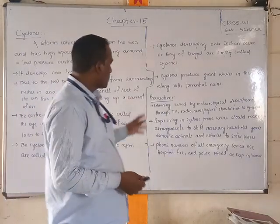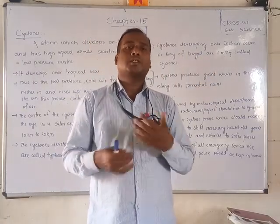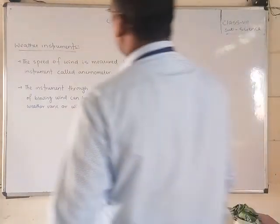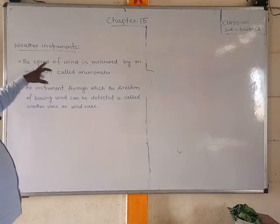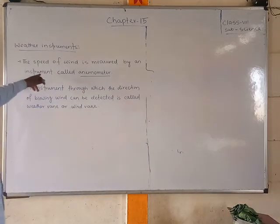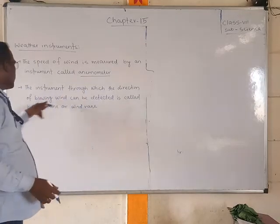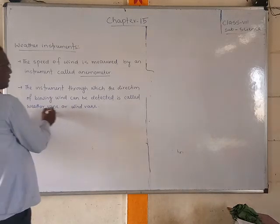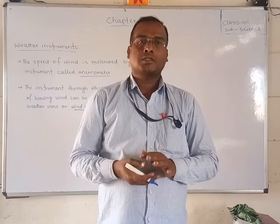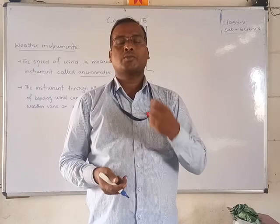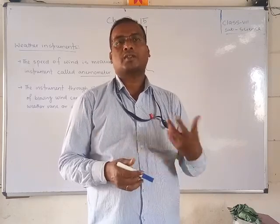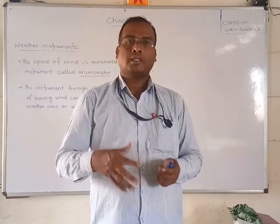Now let us discuss weather instruments. The speed of wind is measured by an instrument called an anemometer. The direction of the blowing wind can be detected using an instrument called a wind vane or weather vane. The pressure of air is measured by a barometer, which you already know about.